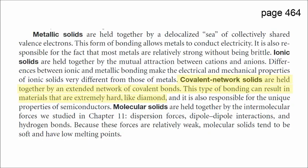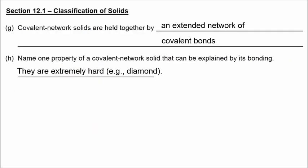Now we turn to covalent network solids. Back on page 464, covalent network solids are held together by an extended network of covalent bonds. This type of bonding can result in materials that are extremely hard, like diamond. So we have answered letter G, an extended network of covalent bonds, and letter H, they are extremely hard, for example, diamond.